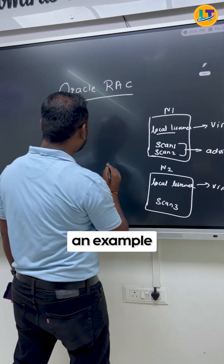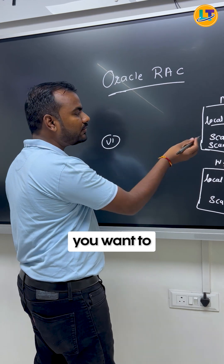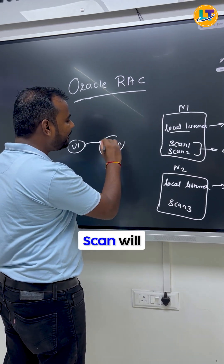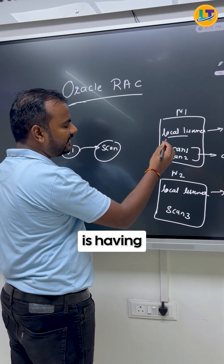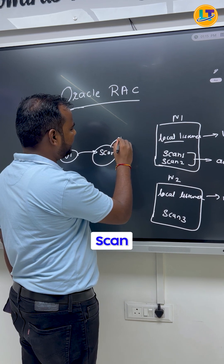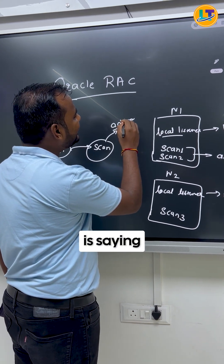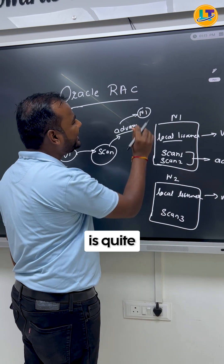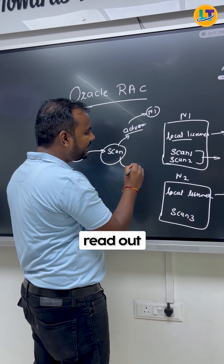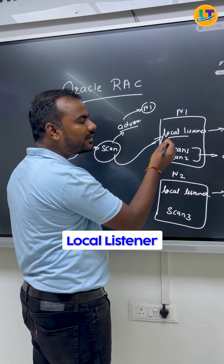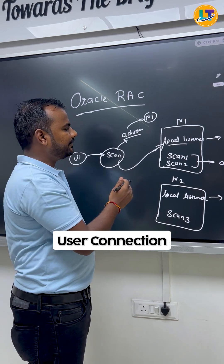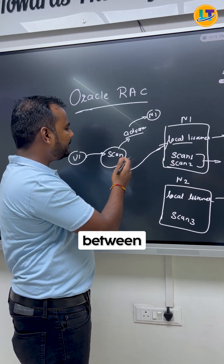Let's take an example. There is a user who wants to connect to the database. That connection will first go to the SCAN. SCAN will decide which node is having less load and is available — it uses advisory for that. Advisory says node number one is not that busy, so SCAN will reroute that connection to the local listener, and then the local listener will take care of that user connection.